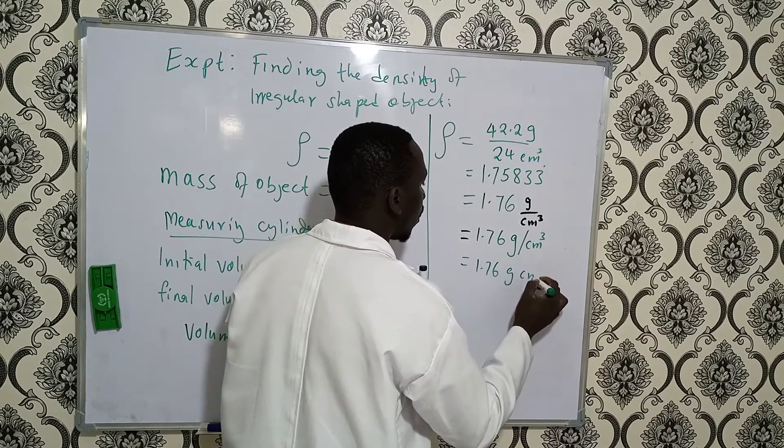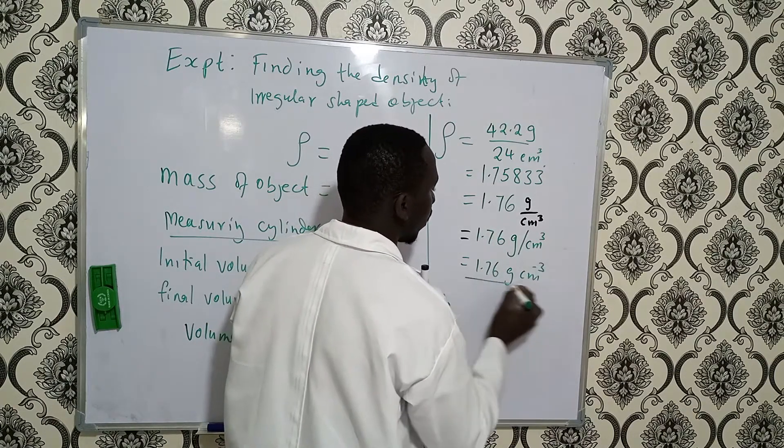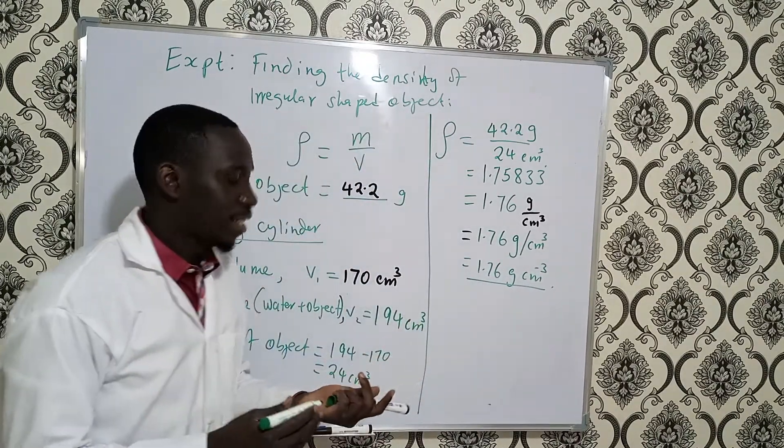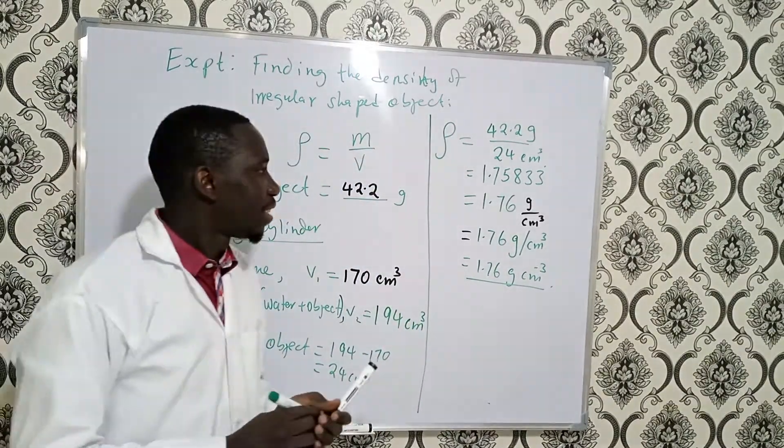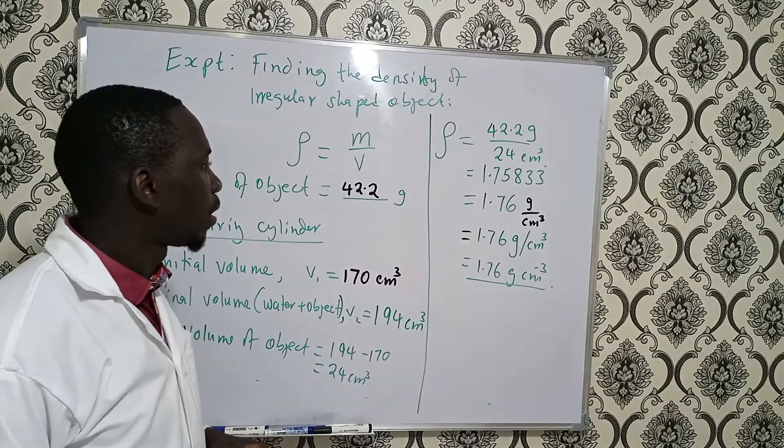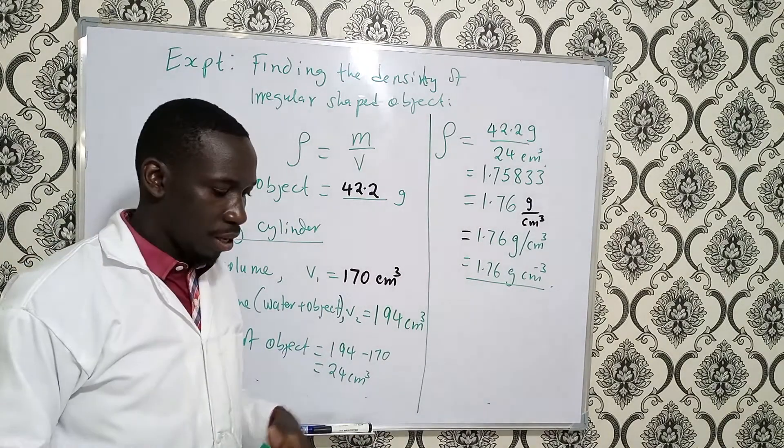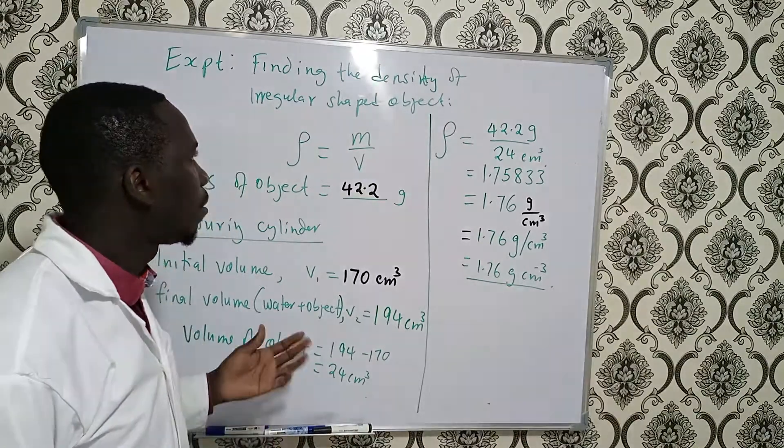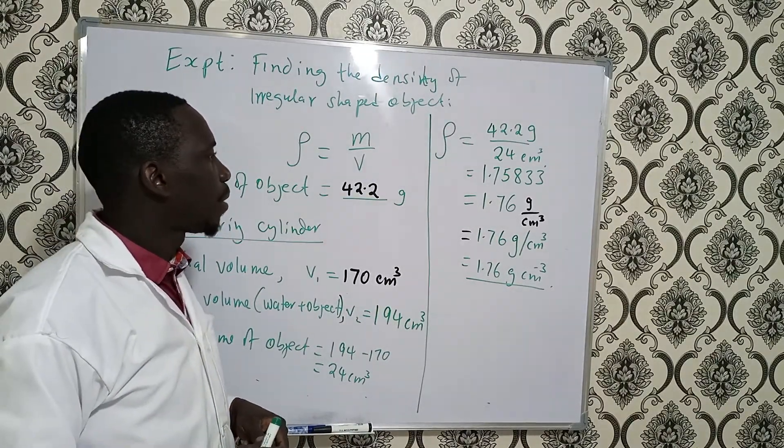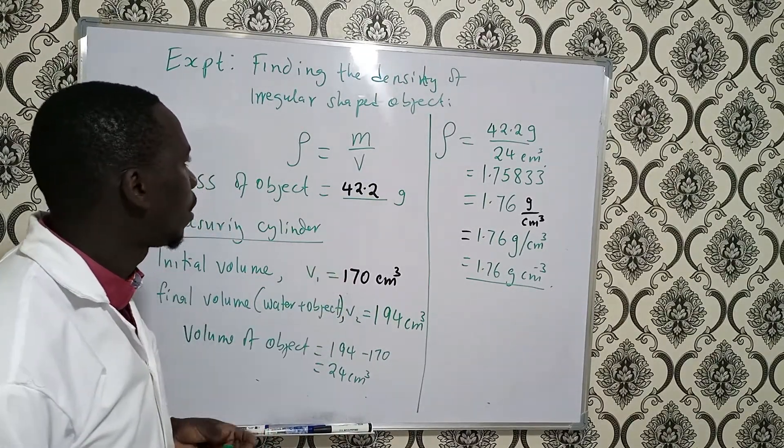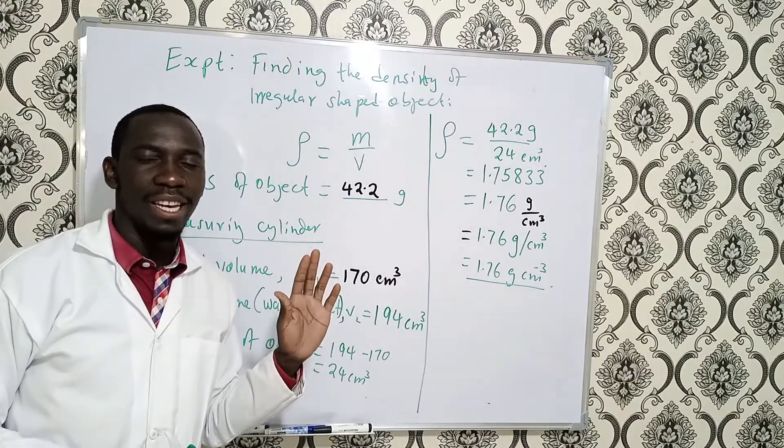So I hope you've enjoyed and you've learned how to find the density of an irregular shaped object by first of all finding the volume by displacement method and then you must measure the mass. Best, bye.